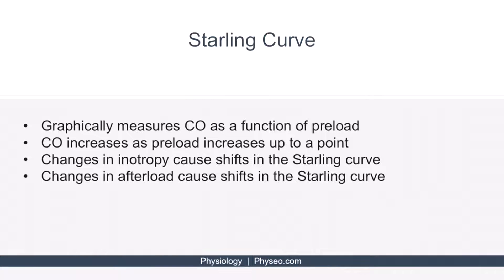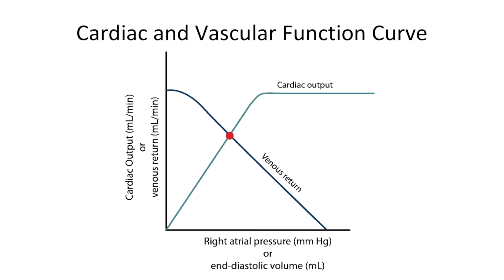The Starling curve is a way to graphically measure cardiac output as a function of preload. Cardiac output increases as preload increases, up to a point. Changes in inotropy cause shifts in the Starling curve, and changes in afterload also cause shifts in the Starling curve.